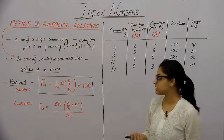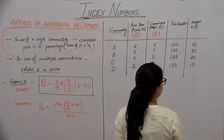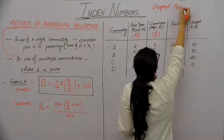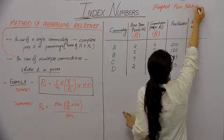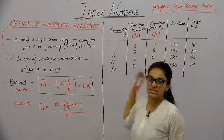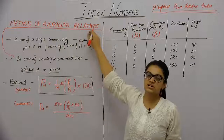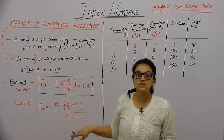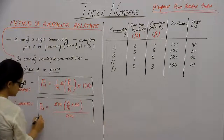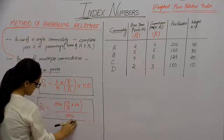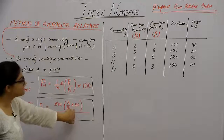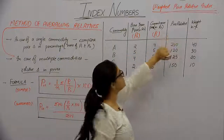We are looking at the weighted method, which is basically called the weighted price relative index. This is also known as the method of averaging relatives. The formula for the weighted path is: P01 equals summation of weights multiplied by P1 upon P0 into 100. The bracket term — P1/P0 × 100 — is basically the price relative, which represents the relative change in prices.